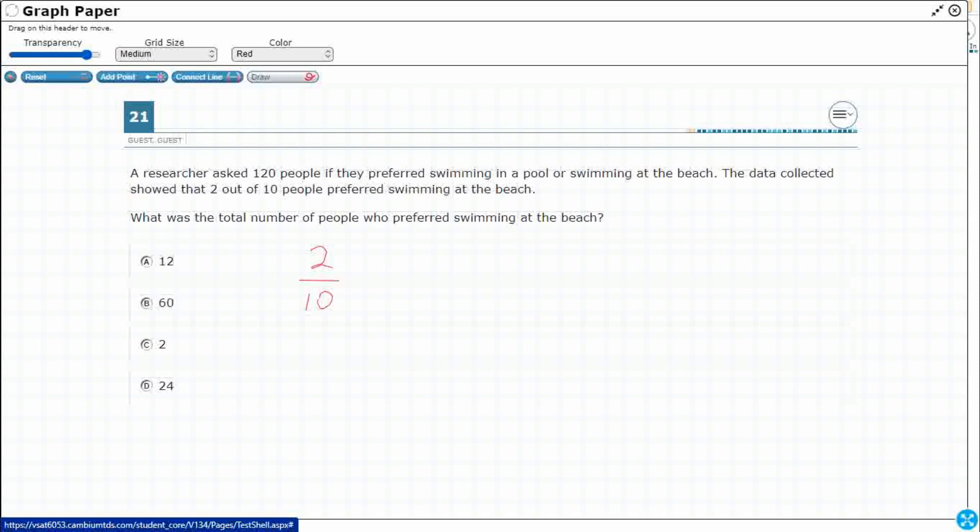So I'm going to say 2 beach. And in my proportion here, my 10 is my total. I'm going to make an equivalent fraction so I can get a proportion. And what do we know? We know there's 120 people total.